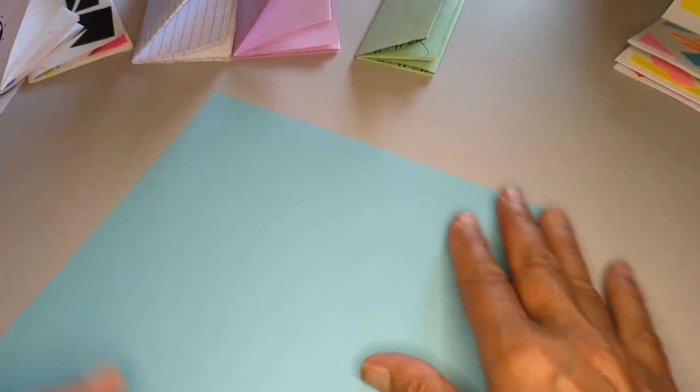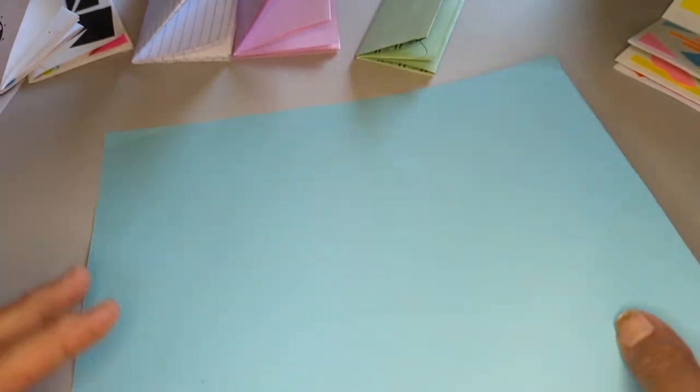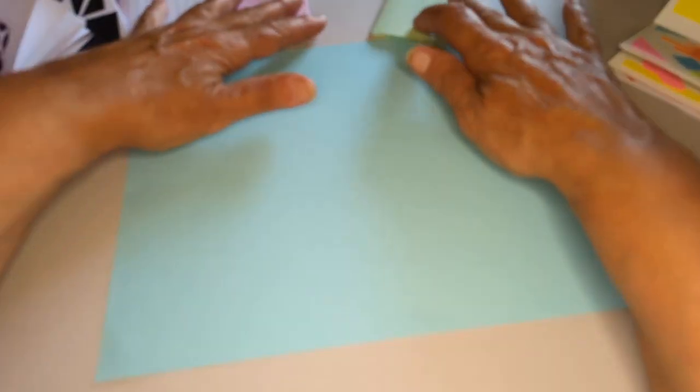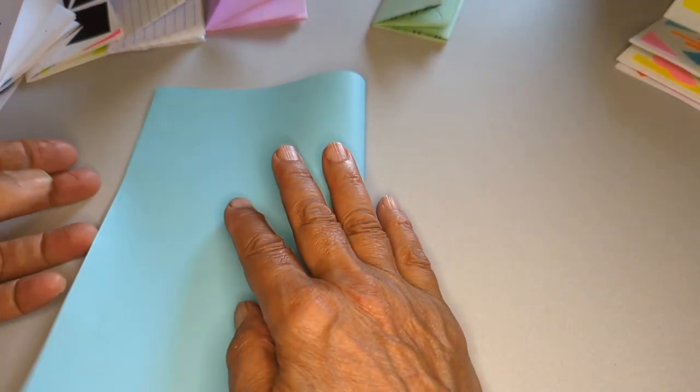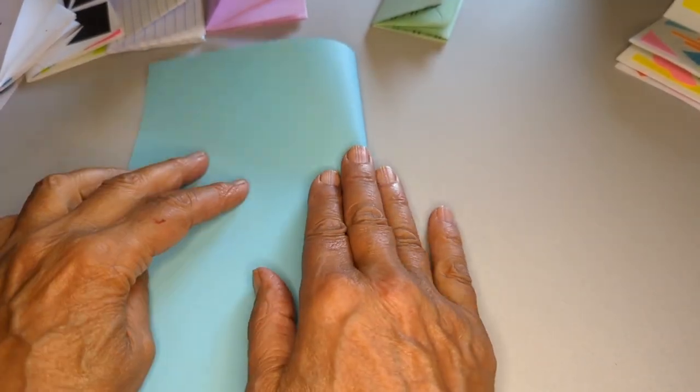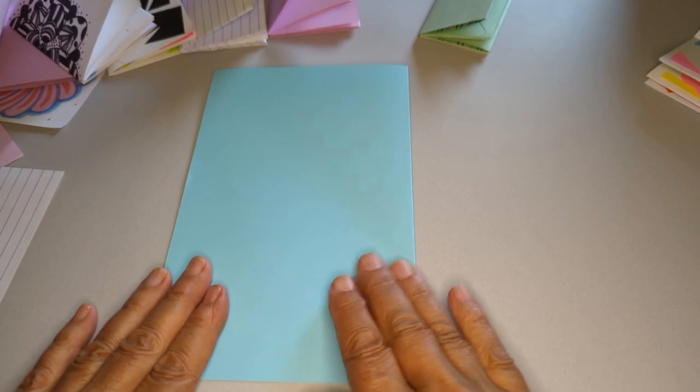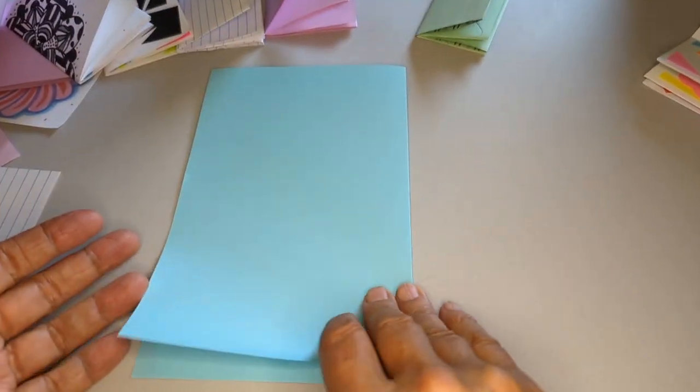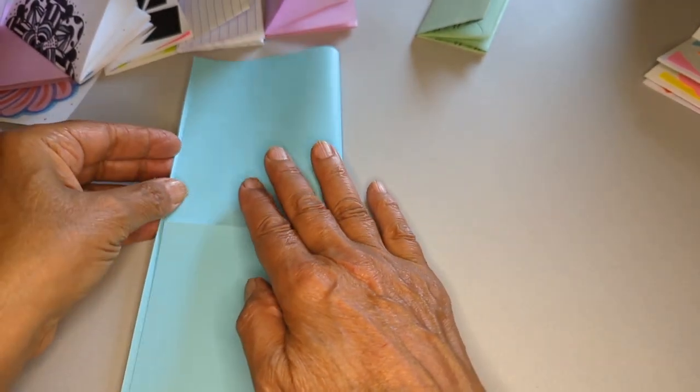The way I just showed you is that you start off by folding it in half the narrow way. But what if you did all the steps correctly, but you started off folding it the book fold way? This may not seem like a big difference, but it really does make a difference. So I did the book fold. Now I'm going to open it up and do the narrow fold.